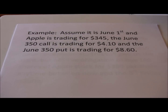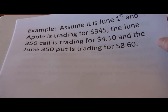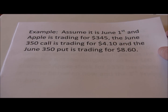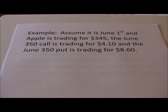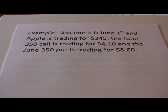Let's look at an example. Assume it's June 1st and Apple stock is currently trading for $345 — those were approximate numbers when I made up this example, and stock prices fluctuate by the second. So just assume it is June 1st and Apple is trading for $345. The June 350 call is trading for $4.10 and the June 350 put is trading for $8.60.